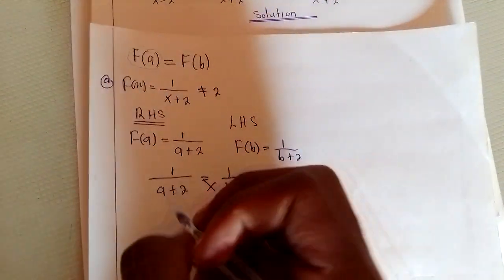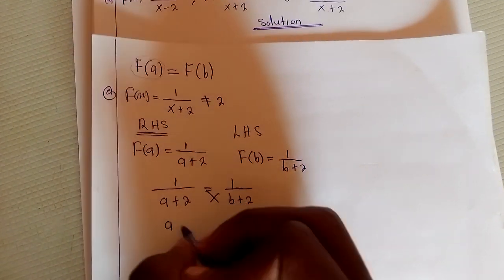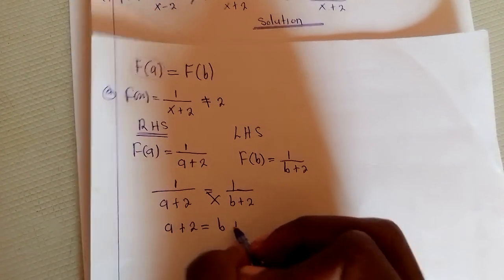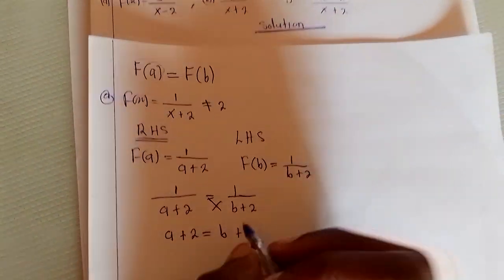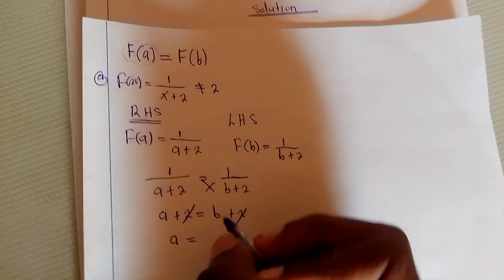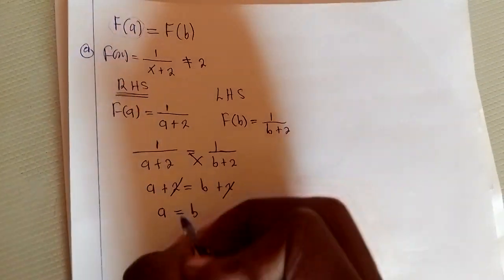When we cross multiply, we have A plus two equal to one over B plus two, this and this can cancel, discover that A is going to equal B.